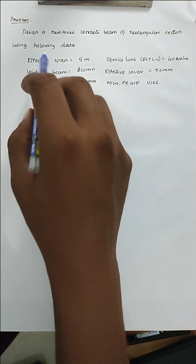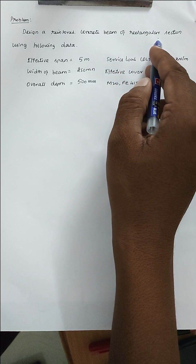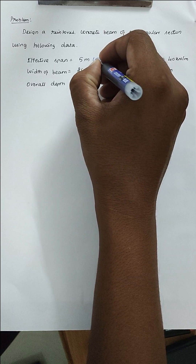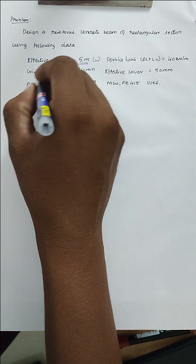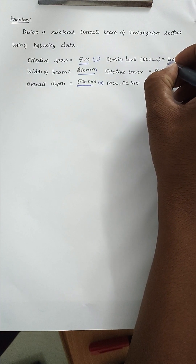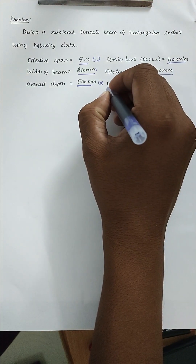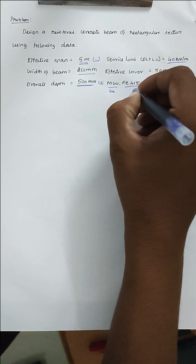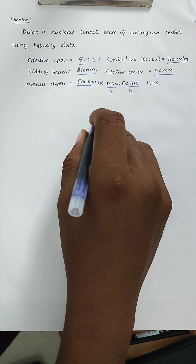Hello friends, welcome to our channel. Today we're going to see a problem related to the design of a beam. Design a reinforced concrete beam of rectangular section using the following data: effective span L = 5 m, width of beam b = 250 mm, overall depth D = 500 mm, service load W = 40 kN/m, effective cover d' = 50 mm, M20 concrete and Fe415 steel. So fck = 20 and fy = 415.